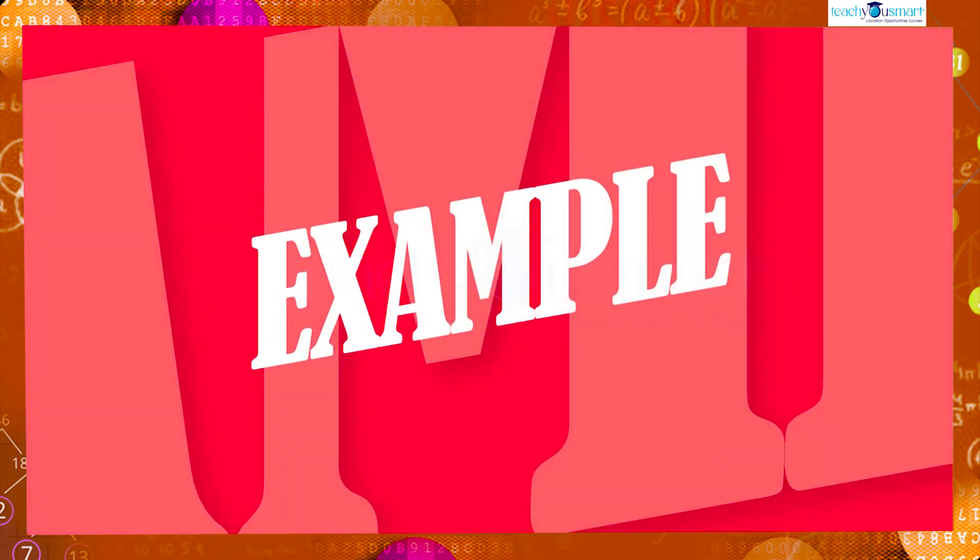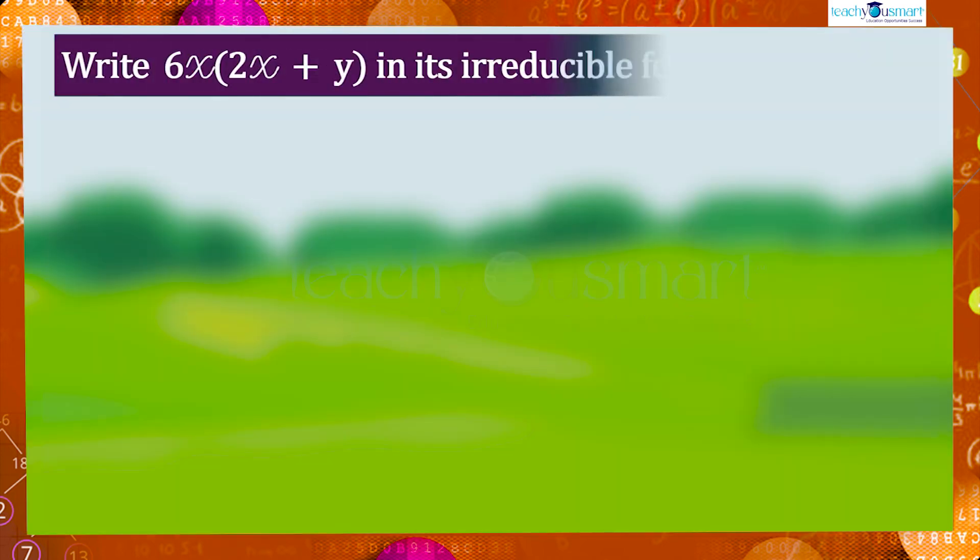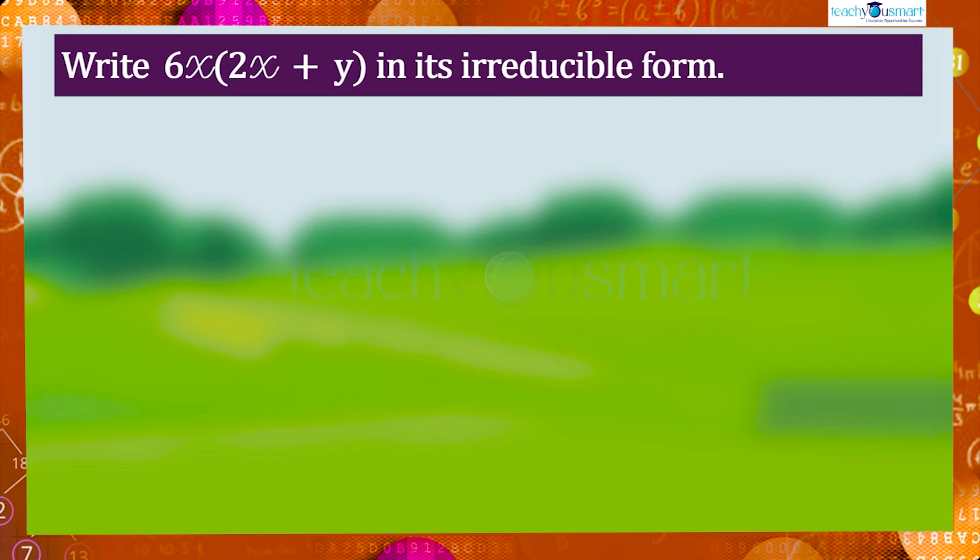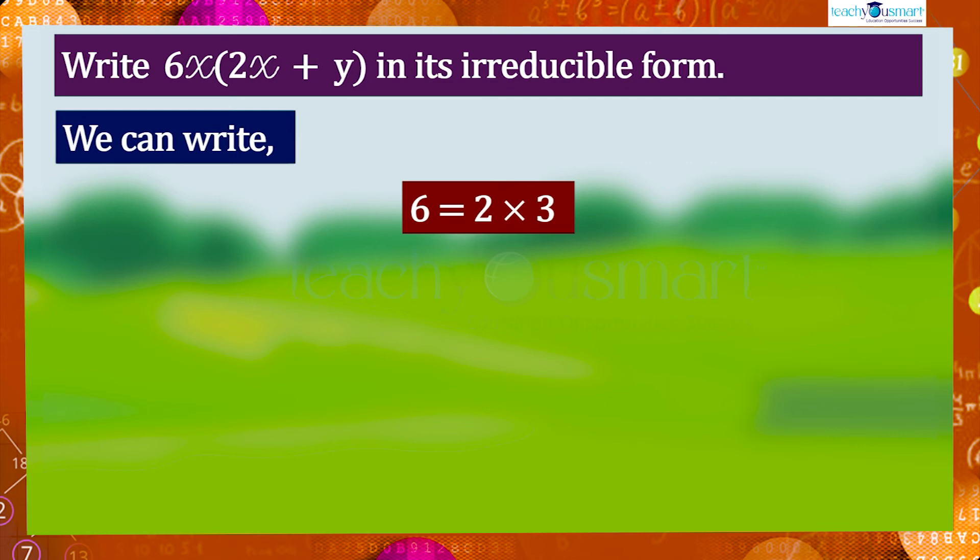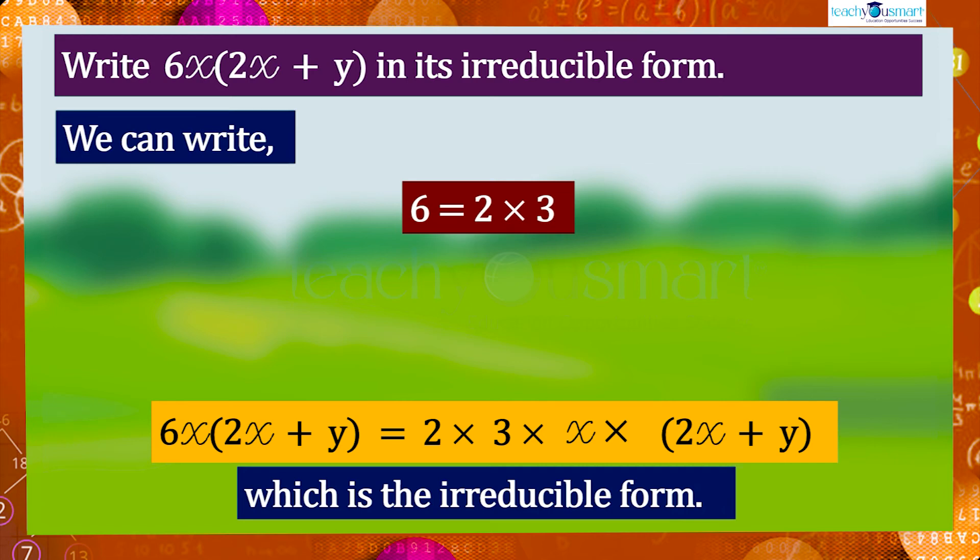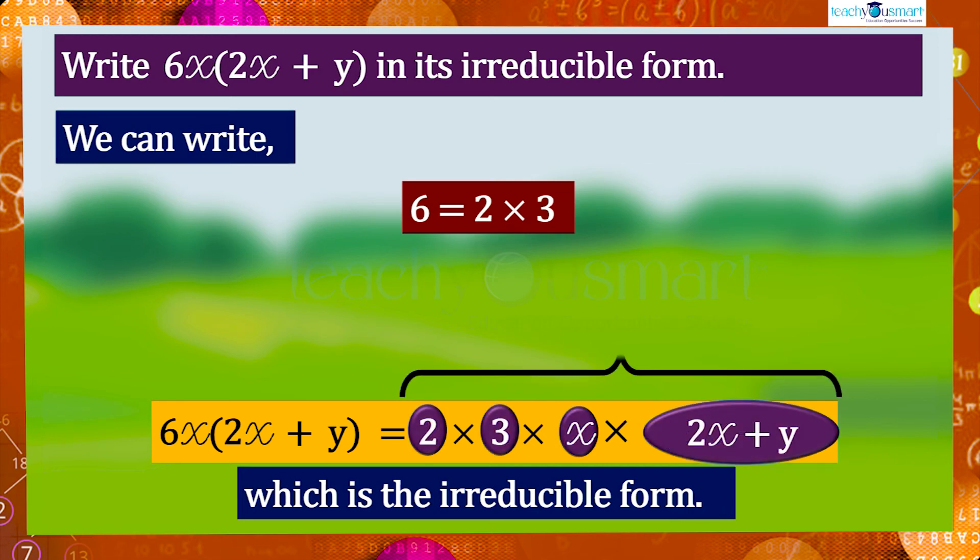Let's see another example: write 6x multiplied by (2x plus y) in its irreducible form. Here we can write 6 as 2 multiplied by 3. Therefore 6x multiplied by (2x plus y) can be written as 2 multiplied by 3 multiplied by x multiplied by (2x plus y), which is the irreducible form. And 2, 3, x, and (2x plus y) are the irreducible factors of the given expression.